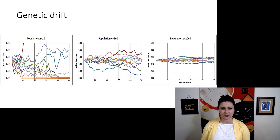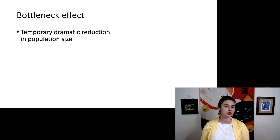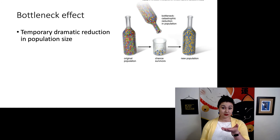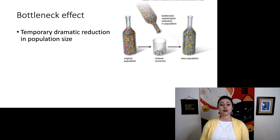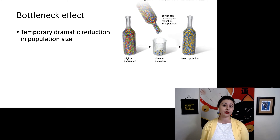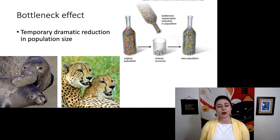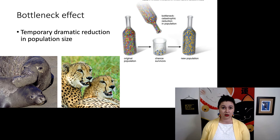There are two important examples of genetic drift to understand. The first is the bottleneck effect — a temporary dramatic reduction in population size. Our original population has a lot of genetic variation, but a catastrophic event forces only a few survivors through. When the population returns to its normal size, it has reduced variation because only a few individuals survived. We see examples in modern-day elephant seals and cheetahs. With elephant seals, there is some historic bottleneck causing their reduction in genetic variation, even though their populations are doing okay now.